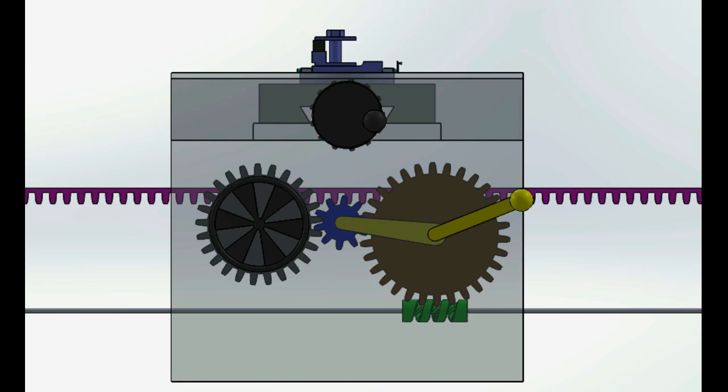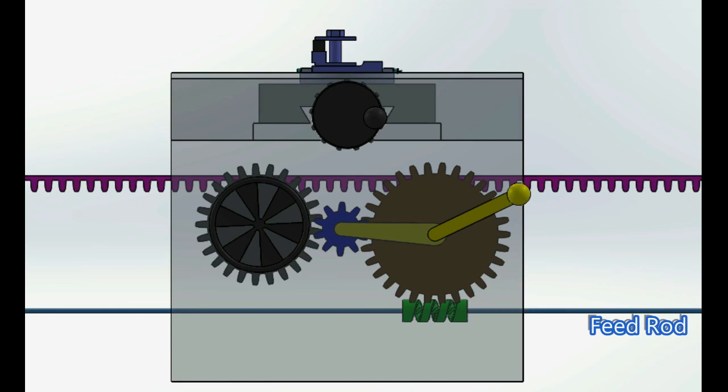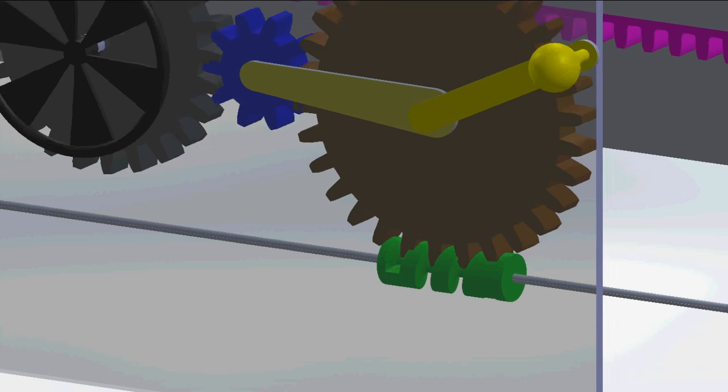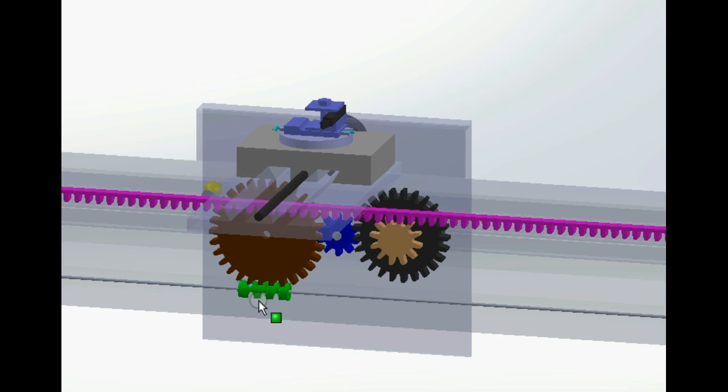Power is transmitted to the gear attached to the feeding handle. Thus the rack and pinion is actuated and the carriage moves with respect to the rack.